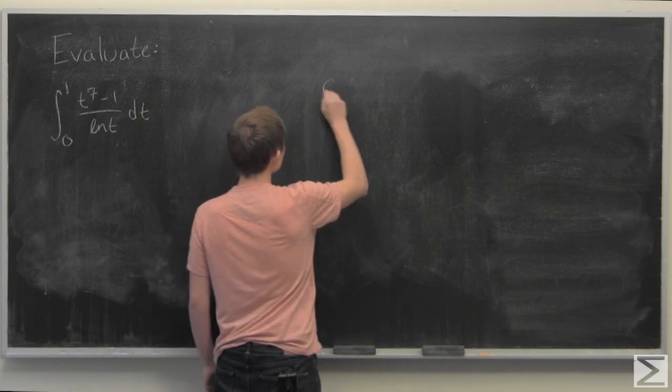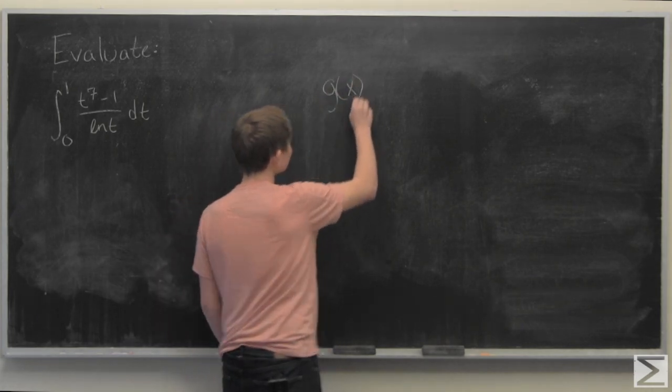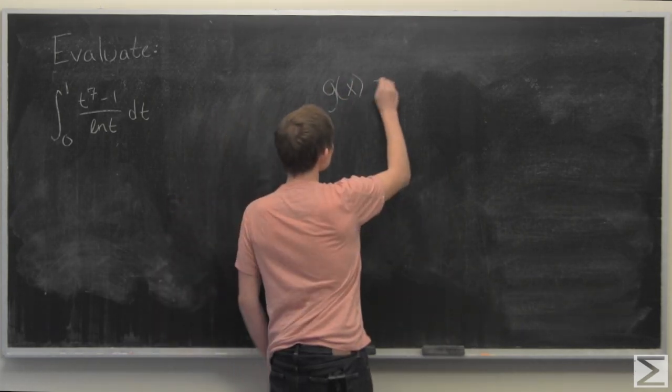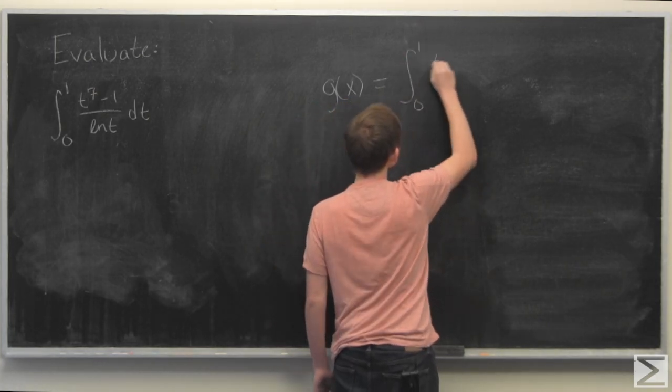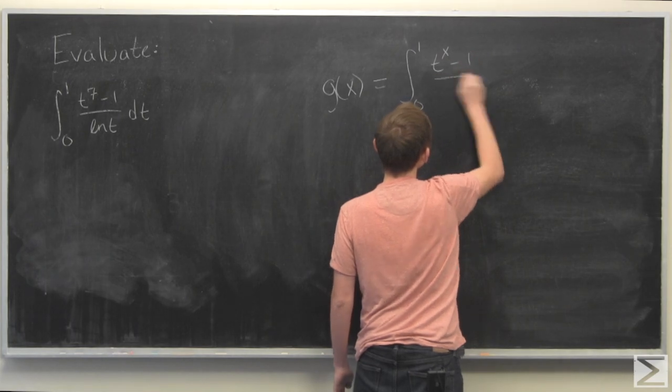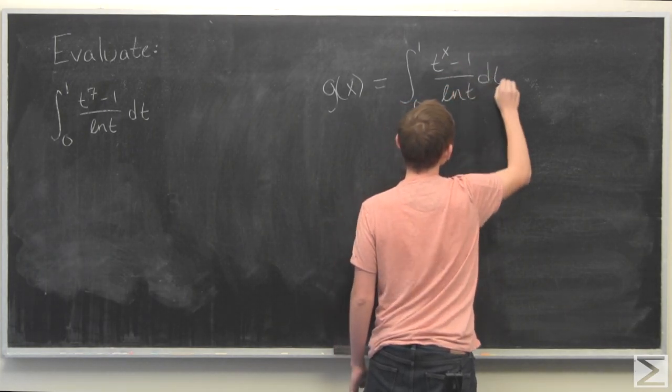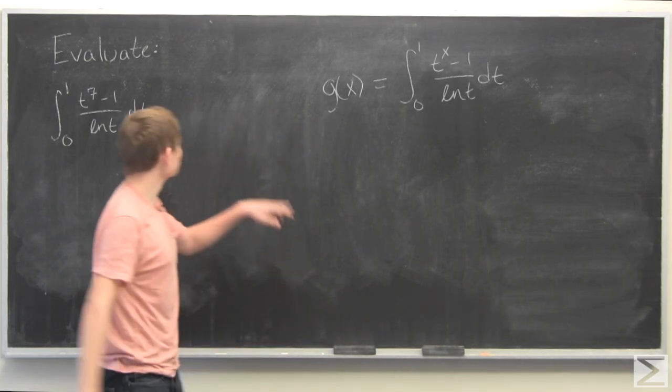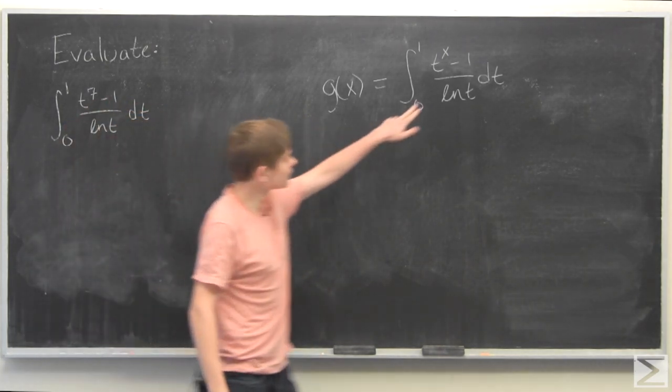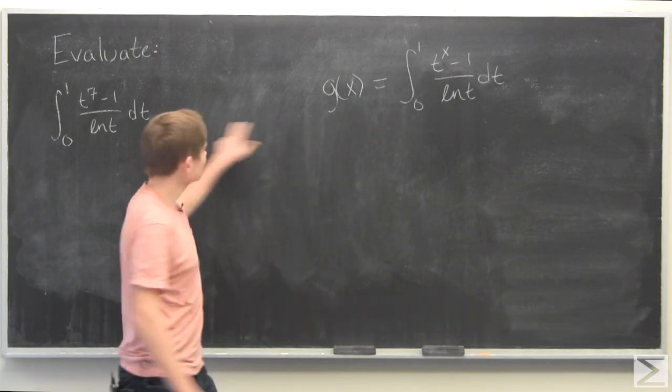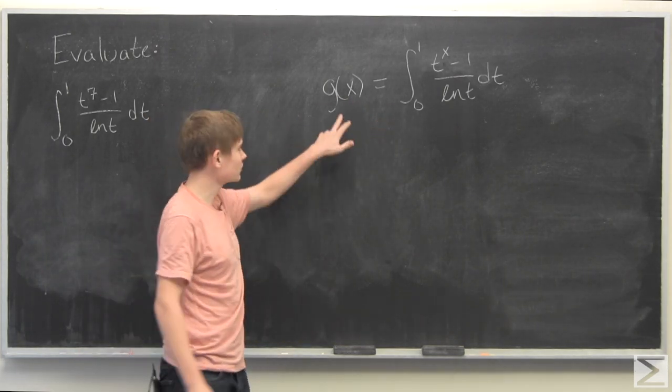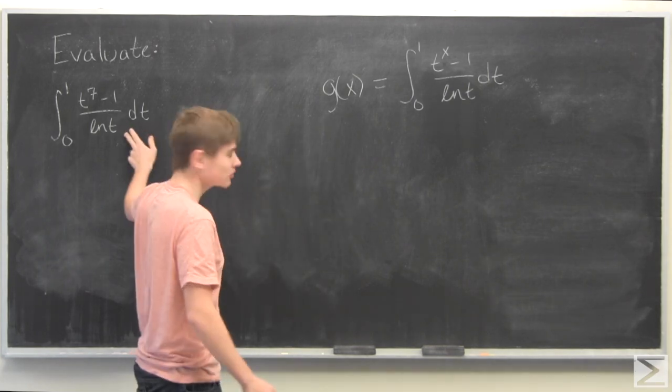What we're going to do is define a function g of x which is equal to the integral. Notice that instead of the 7 we have an x here, and therefore this is equal to this when x is equal to 7. So g of 7 is equal to this function.